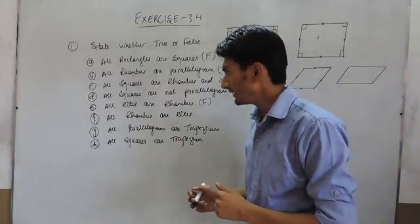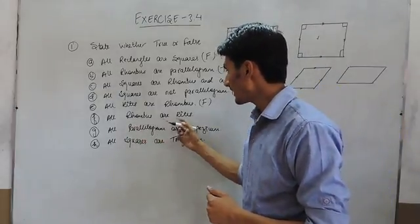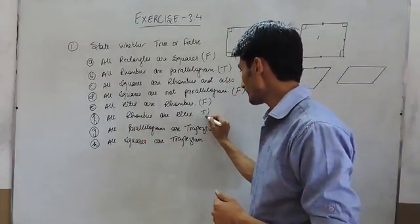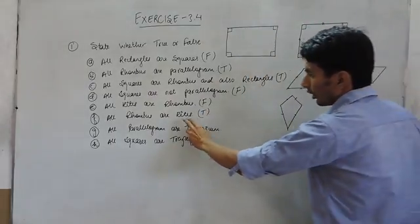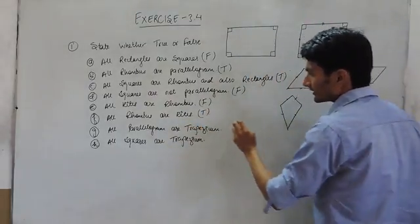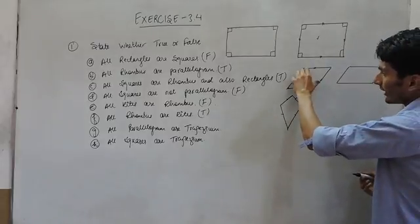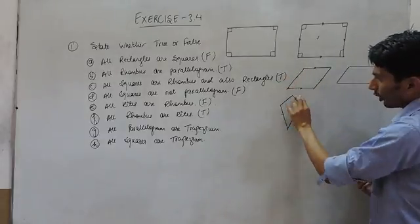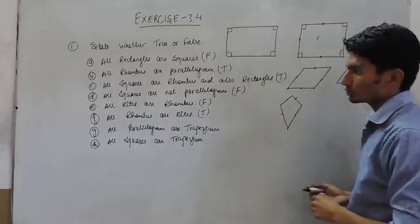In the next statement, all rhombuses are kites. This is true because a rhombus also has two adjacent sides equal, and all kites also have two adjacent sides equal. So all rhombuses can be kites.